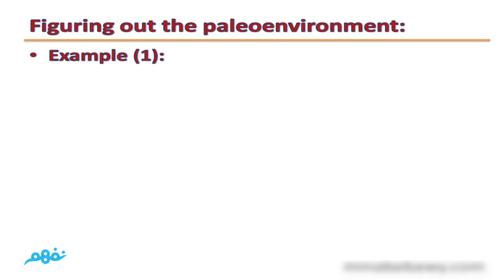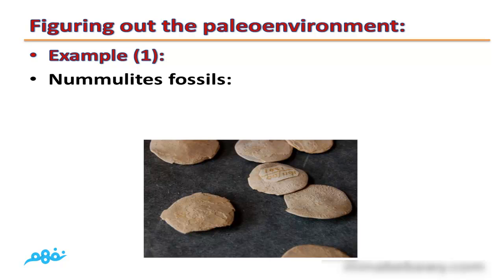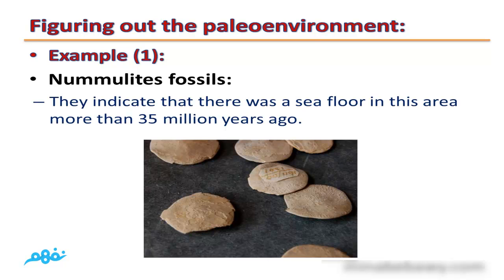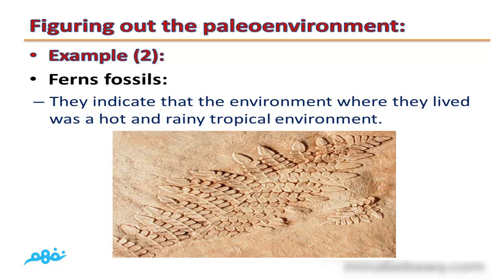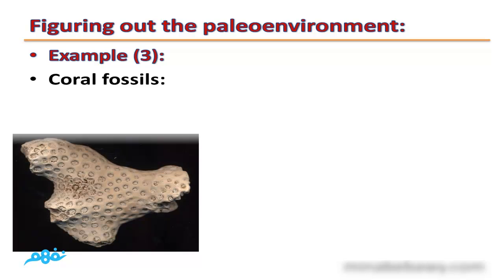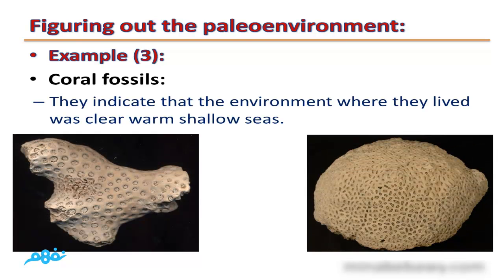Figuring out the paleo environment: Example 1 — nummulite fossils indicate that there was a sea floor in this area more than 35 million years ago. Example 2 — fern fossils indicate that the environment was hot and rainy tropical. Example 3 — coral fossils also indicate past marine environments.